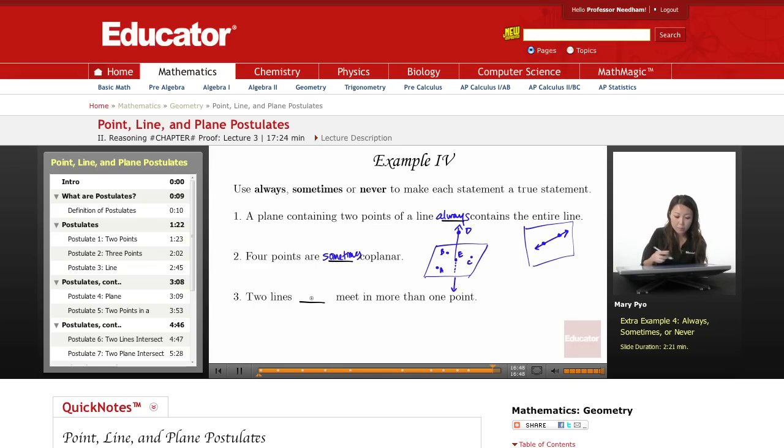Two lines, always, sometimes, never, meet in more than one point. Two lines when they intersect. Do they always meet at one point, sometimes, or never?